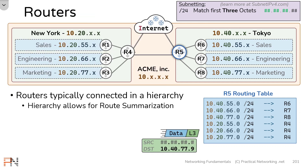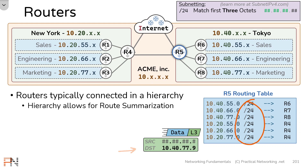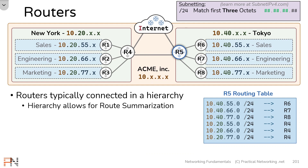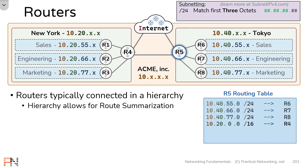In practice, if a packet showed up to router 5, each of these routes would have router 5 look at the first three octets to find a match. For example, 10.40.77 matches that route and that particular packet would be sent to router 8. And if another packet were to show up on router 5, router 5 would take a look at the first three octets to find a match, and this particular packet would be sent to router 4. Notice in router 5's routing table we have three routes all pointing to router 4, accounting for each of the three networks in the New York office. But everything at the New York office starts with 10.20. What if we could simplify these three routes into a single route telling router 5 to only look at the first two octets to find a match on 10.20? We absolutely can by telling router 5 to match on a slash 16 network.